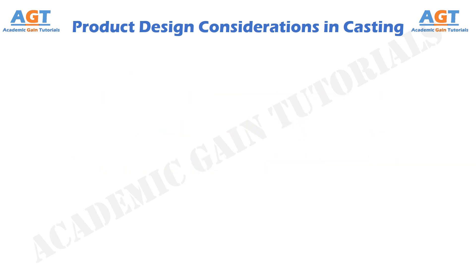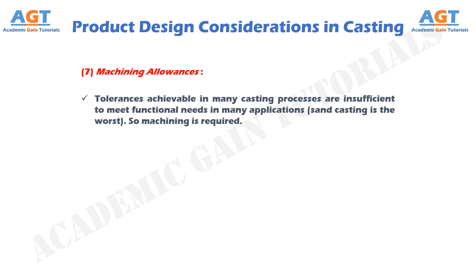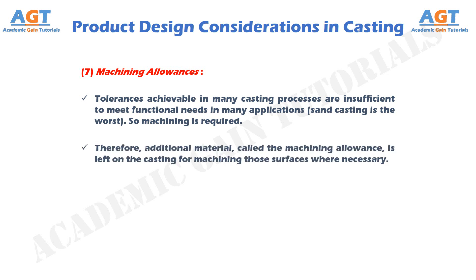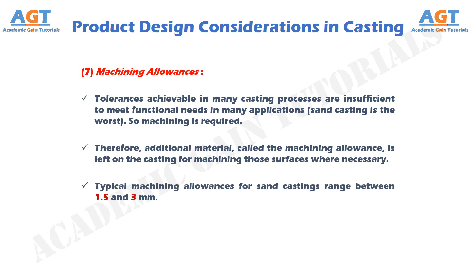Number 7: Machining Allowances. Tolerances achievable in many casting processes are insufficient to meet functional needs in many applications — sand casting is the worst — so machining is required. Therefore, additional material called the machining allowance is left on the casting for machining those surfaces where necessary. Typical machining allowances for sand castings range between 1.5 and 3 mm.